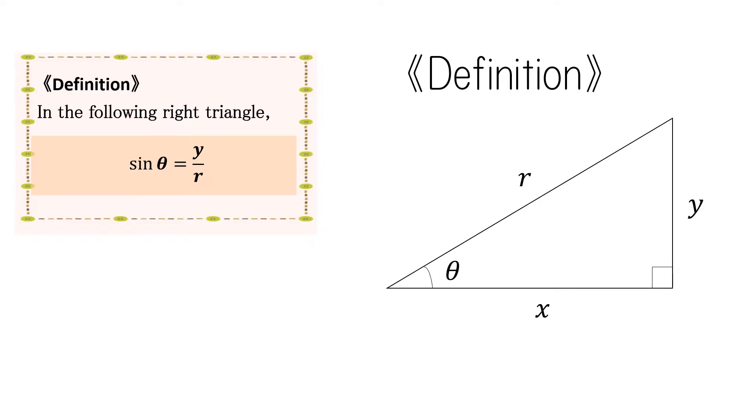To begin, here's a definition. In the following right triangle, sine theta equals y over r.